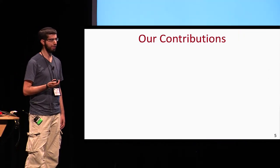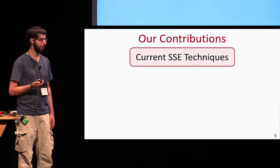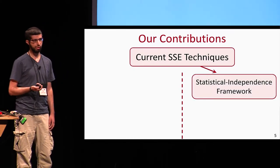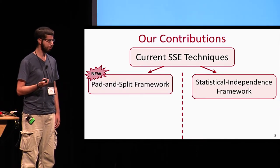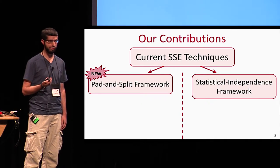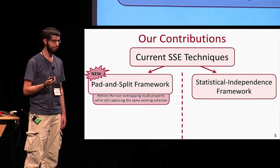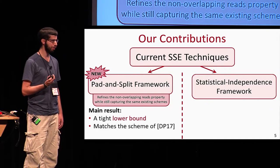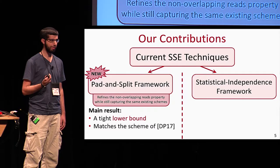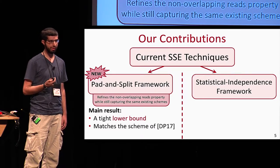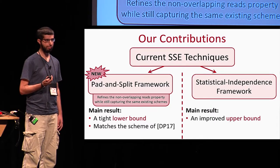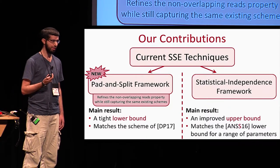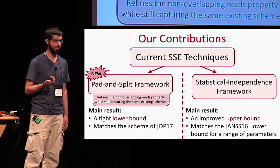Our contributions are as follows. We observe that all current SSE techniques in this context fall into two frameworks. The first is the already-mentioned statistical independence framework. The second is a new framework we introduce called the Padded Split Framework, which refines the non-overlapping reads property but still captures the same existing schemes. Within this framework, we show a tight lower bound that matches the scheme of Dimitris and Papamantou. Within the statistical independence framework, our main result is an improved upper bound: we construct a new SSE scheme that matches the lower bound of Asharov et al. for a range of parameters.